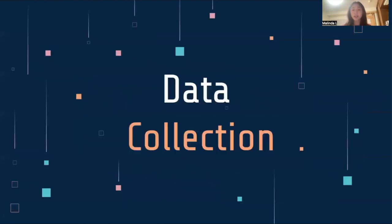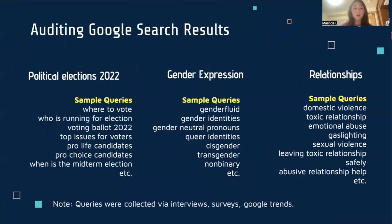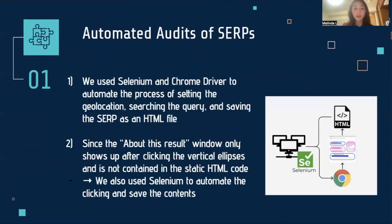Now let's turn our attention to the data collection process. When we audit Google search, we try to focus on topics whose results have real-world impacts, such as political elections or gender identity. Then for each topic, we gather possible queries to search by interviewing people or other means. Some examples of the queries that we use are shown. In order to collect the search result pages, we use Selenium and Chrome driver to automate the processes: opening up the Chrome browser, setting the geolocation, searching the queries, and then finally saving the search pages as HTML files.